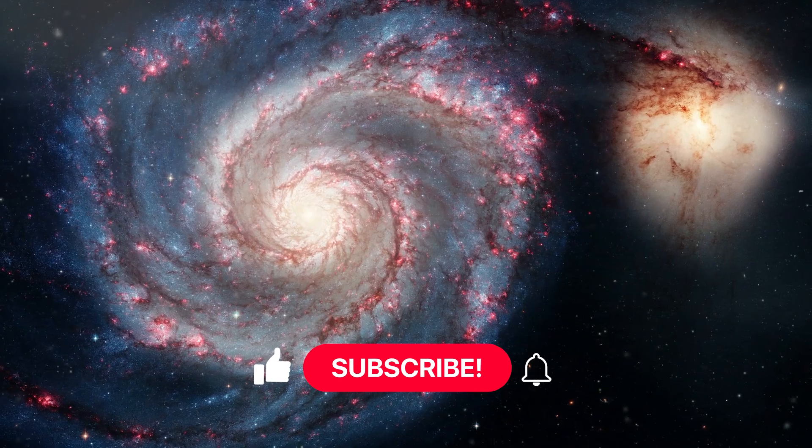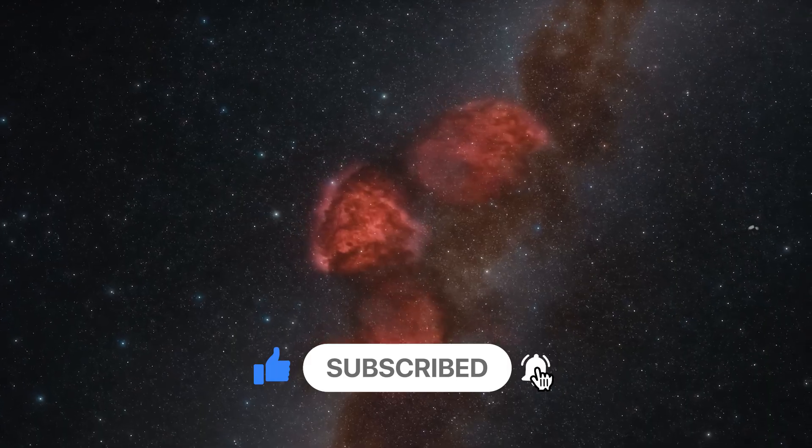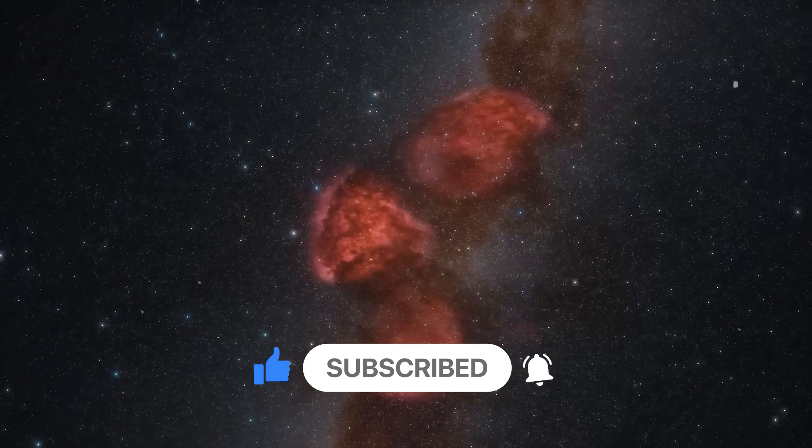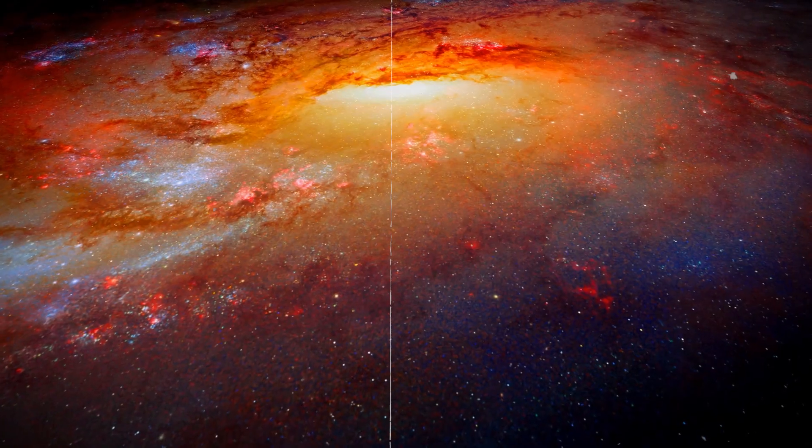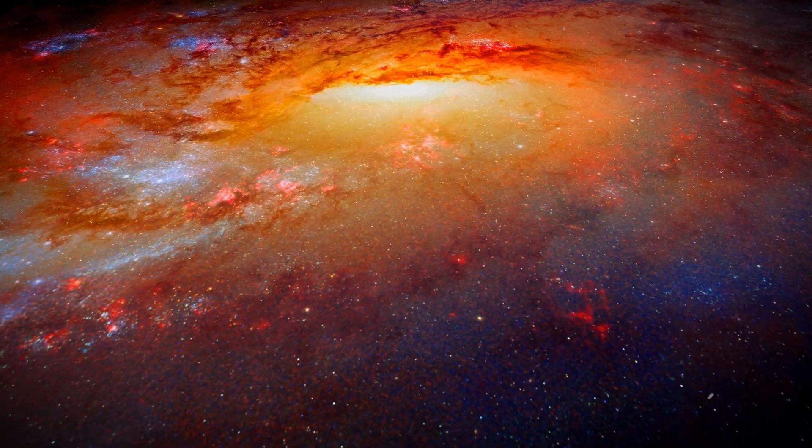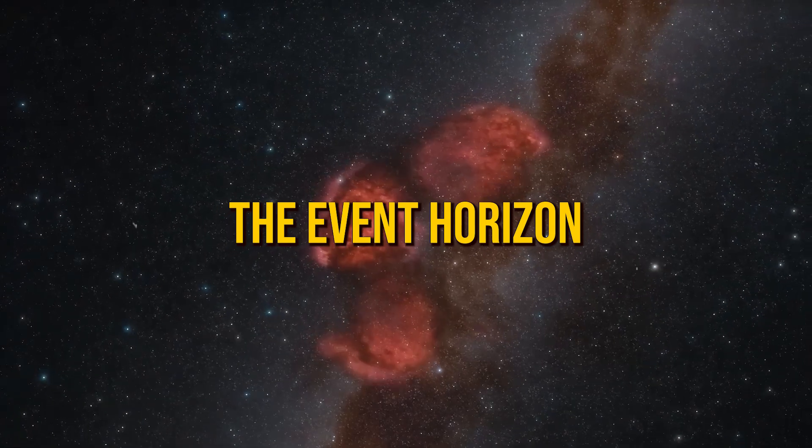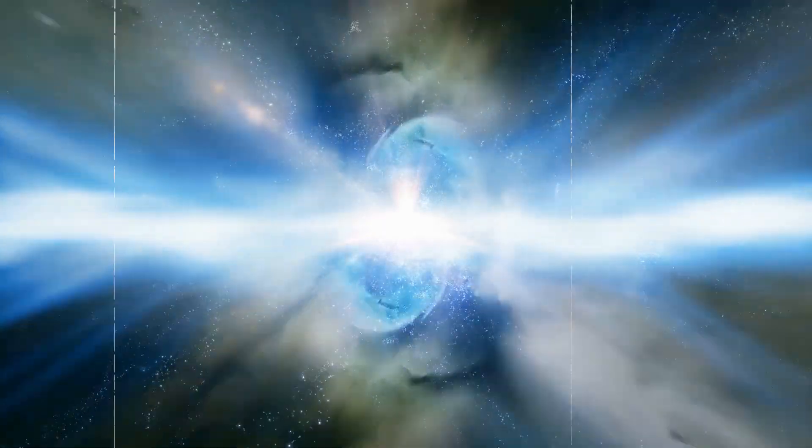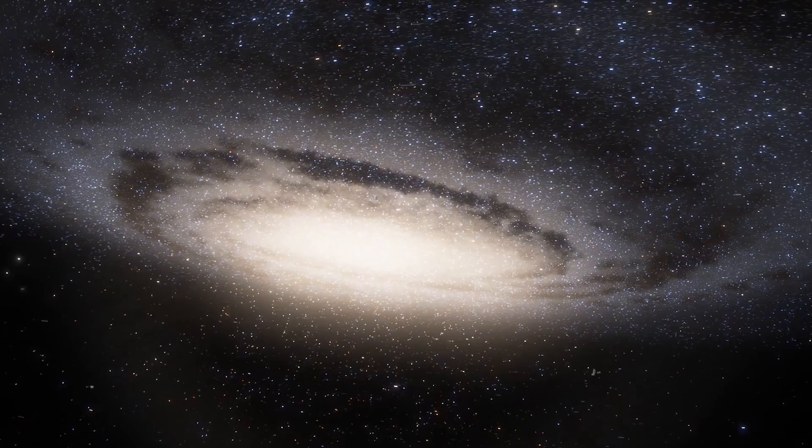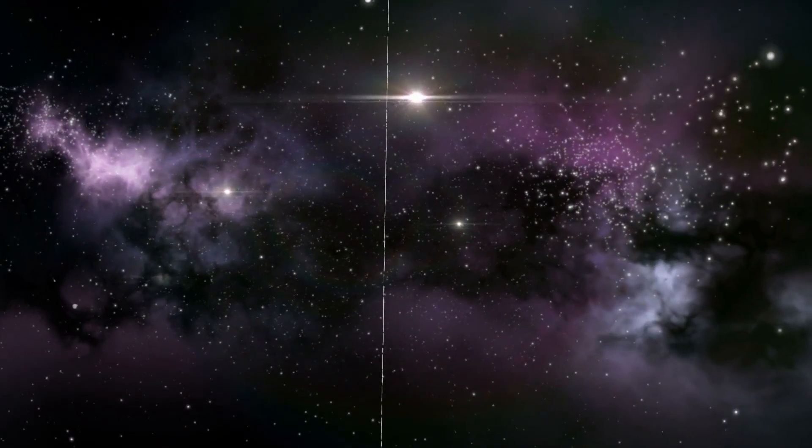The vastness of the cosmos is marked by different borders that define our understanding of the universe. These borders are known as the particle horizon, the event horizon, and the Hubble horizon. Each one offers a unique glimpse into the mysteries of the cosmos, hinting at the limits of what we can observe and comprehend.